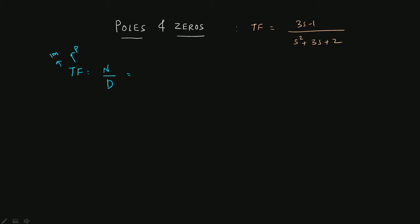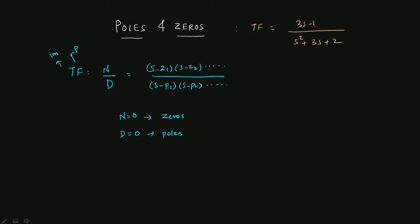You have to represent the numerator of the transfer function as (s - z1)(s - z2) and so on, however many terms are in the equation. The denominator is represented as (s - p1)(s - p2)(s - p3) and so on. If you equate the numerator to zero you get the zeros of the transfer function, and if you put the denominator equal to zero you get the poles.